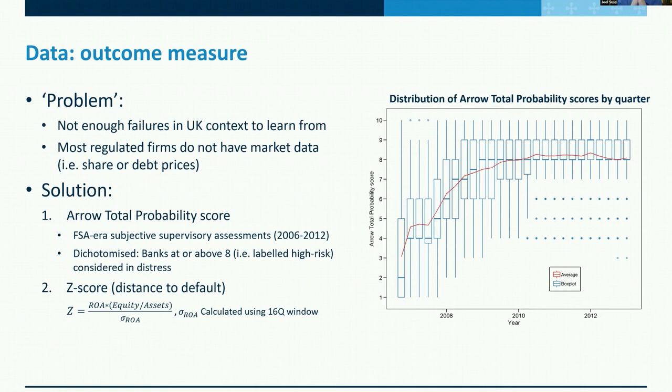We also use an objective measure of bank risk based on balance sheet and financial statement variables: the Z-score, or distance-to-default measure. This is calculated based on return on assets, equity ratios, and the standard deviation of return on assets using a 16-quarter window. That serves as a robustness outcome measure for constructing models of distress.